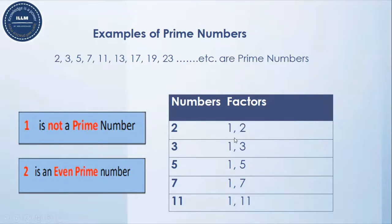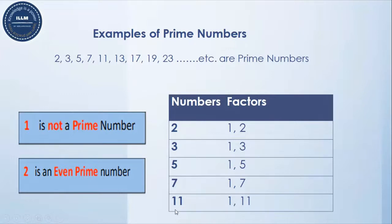They are divisible by only one and itself. Now have a look at this table: 2 is having two factors — one and two. Three is also having two factors — one and three. Five is also having two factors — one and itself. Seven is also having two factors — one and seven. Eleven is also having two factors — one and eleven.